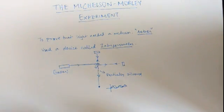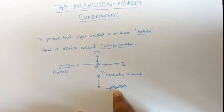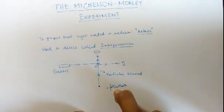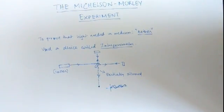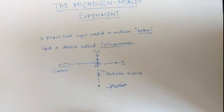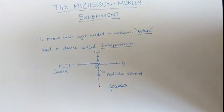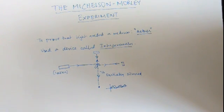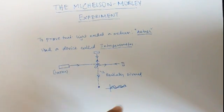This ether wind must have caused some changes in the interference patterns since it would result in the change of the light's path back from the partially silvered mirror. But even though they performed this experiment multiple times, in different climatic conditions, in different times of the day, they observed a much similar interference pattern in every experiment.